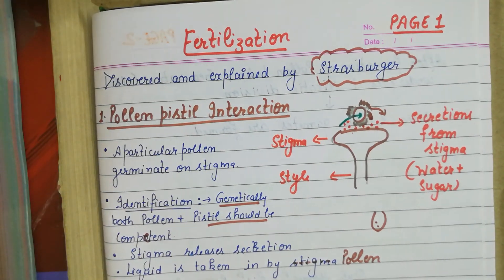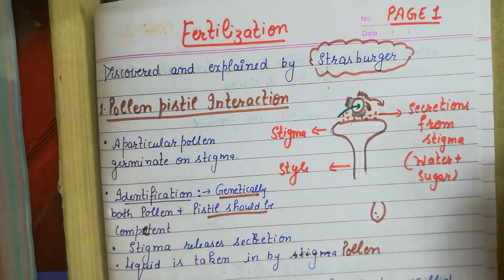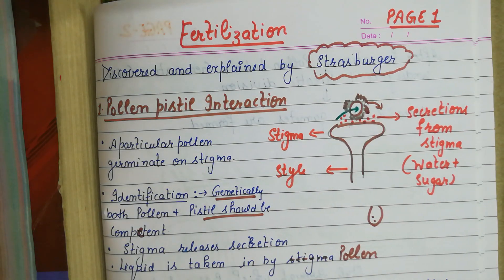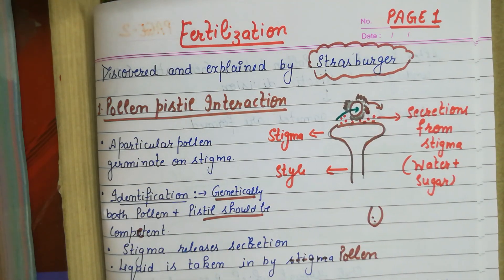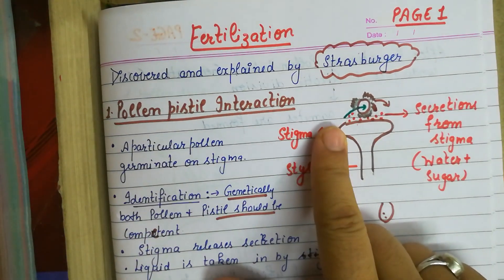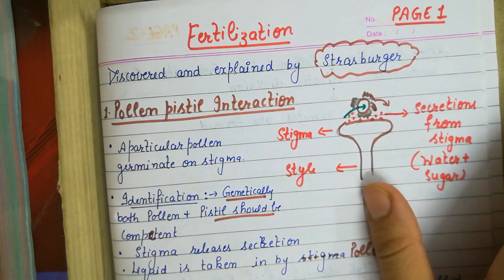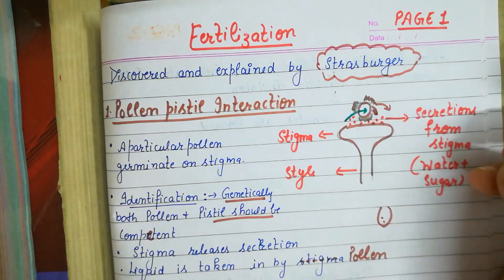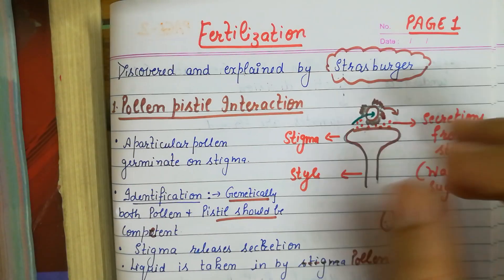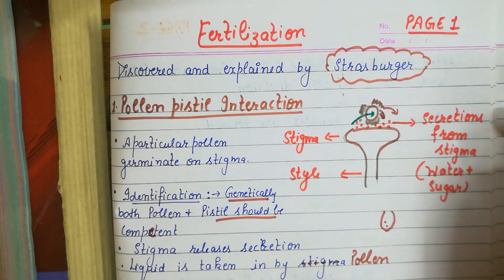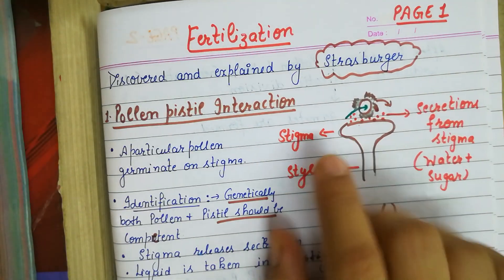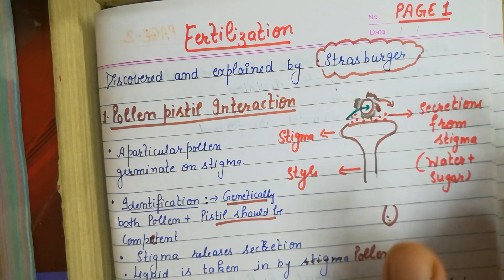Good morning class 12th. We have discussed all the pre-fertilization events up to pollination. Today in this class we are going to study fertilization in detail. It looks like a simple word, but it is a complicated process which includes a number of steps, and today we will discuss those steps one by one in detail.